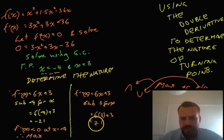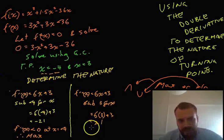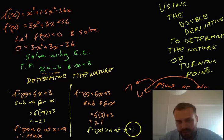And we'll get 6 times 3 plus 3, which is 21. Now, it doesn't matter what number it is again, but it is positive. So, what we can say now, to sum this whole thing up, we can say that f double dash x is greater than 0 at x equals 3. Therefore, it's a minimum.